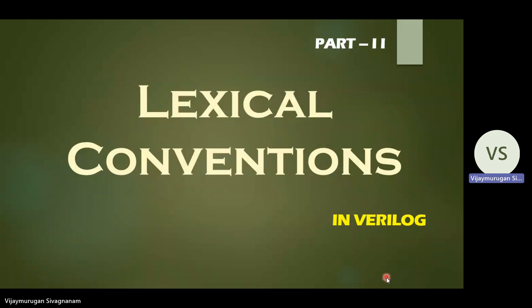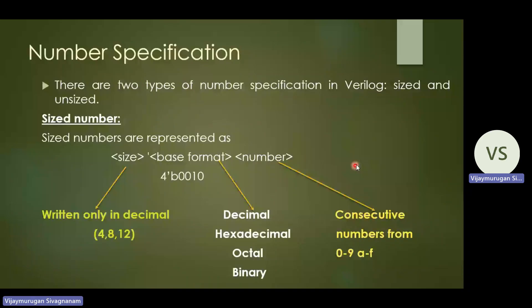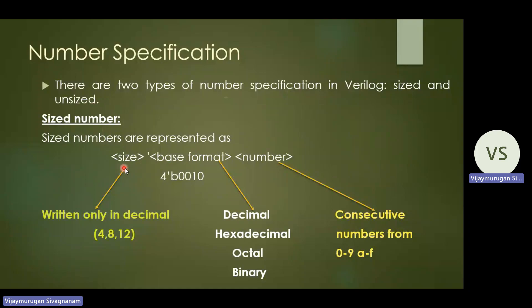In this session, we first discuss number specification. There are two types of number specification in Verilog HDL: sized numbers and unsized numbers. Before performing any operations, you need to declare the numbers. We will discuss each type one by one, starting with sized numbers.